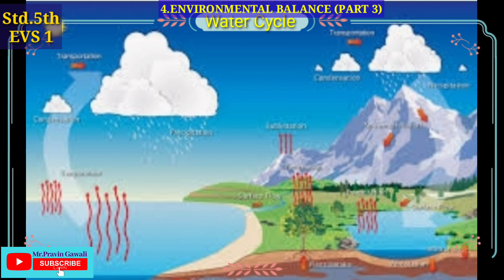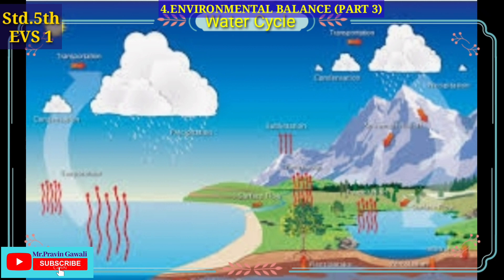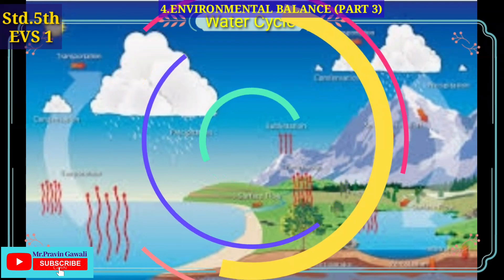Living things get a continuous supply of water because of the water cycle. After rainfall, water gets deposited in streams, rivers, and seas. When the water gets heated, it turns into vapors. The vapors go up into the sky and turn into clouds, and because of condensation, we get rainfall again.